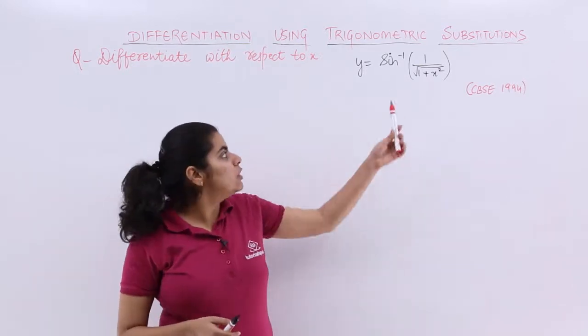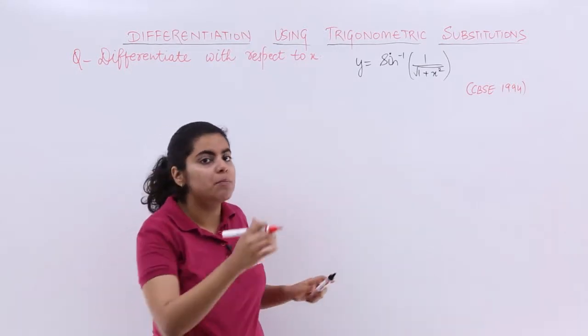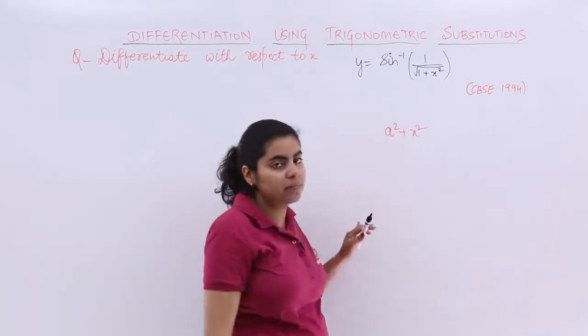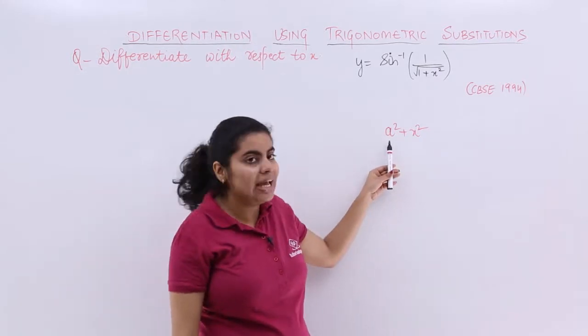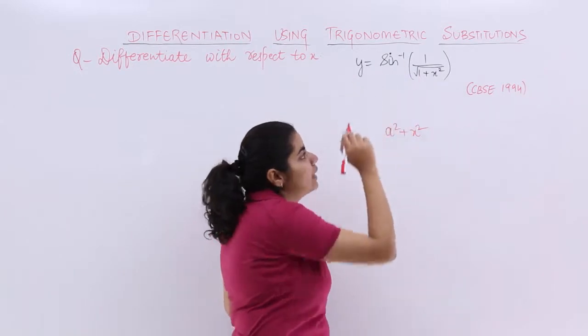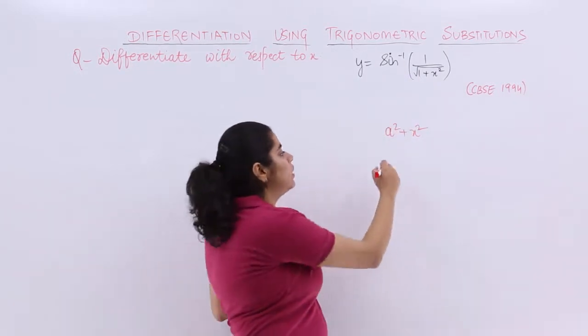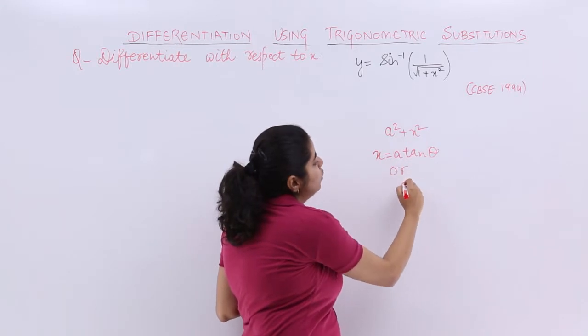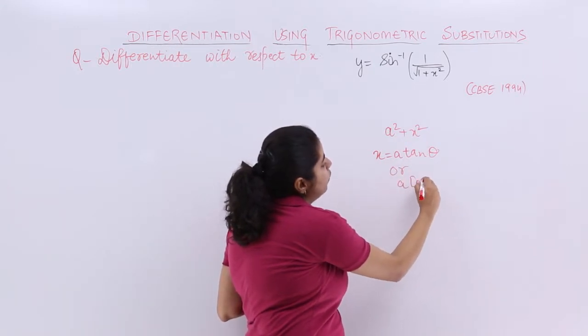Now we are going to use the same thing, and why? Because the substitution was about a² + x². If I treat my a as 1, the denominator is nothing but 1² + x². So either you can substitute x = a tan θ or x = a cot θ.